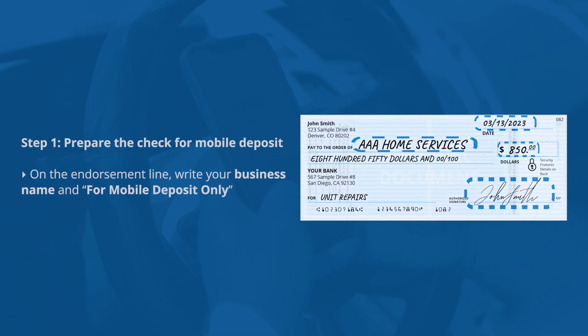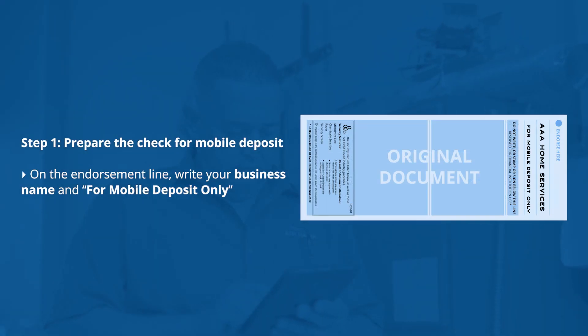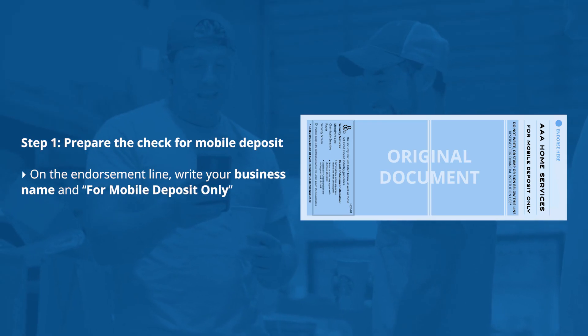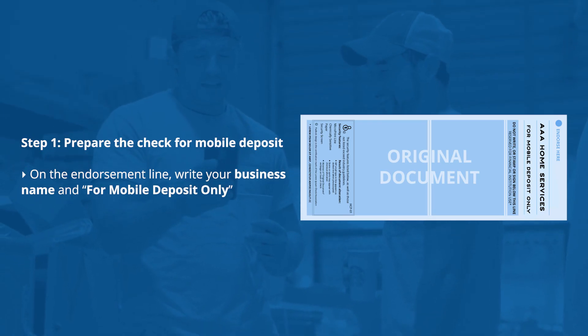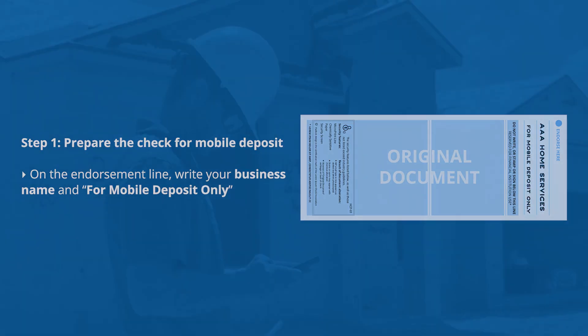On the back of the check, on the endorsement line, write the business name and 'for mobile deposit only.' Once complete, you're ready to move on to the next steps.